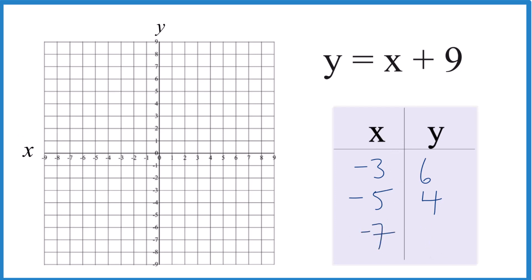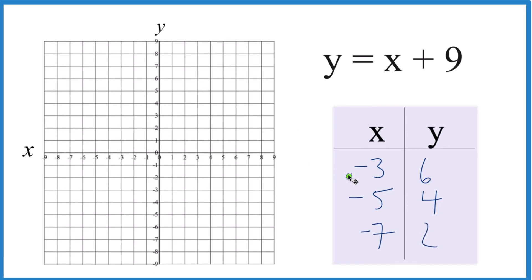Now I can plot these points. So I just chose these so they would fit here on the graph. All right, well, we've got negative 3 for x and 6 for y. That's our first point.